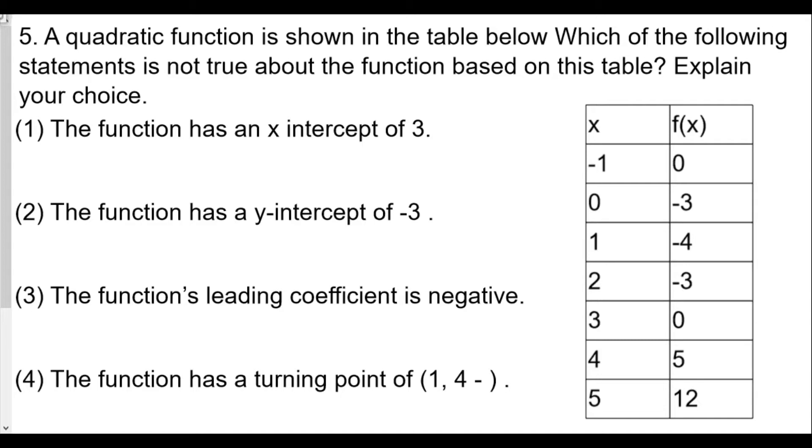The function has an x-intercept of 3. Let's take a look at this. So x-intercept of 3 would mean that when x equals 3, y equals 0. So we see here x equals 3, y equals 0. This is true.